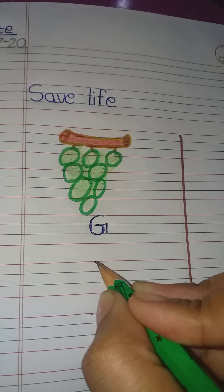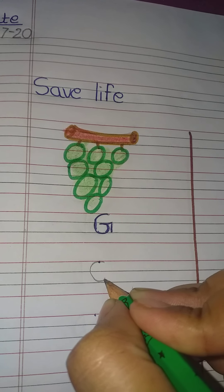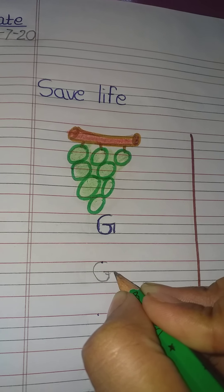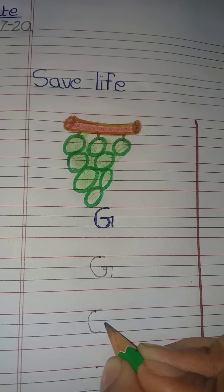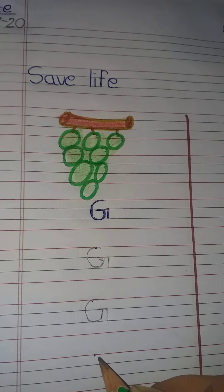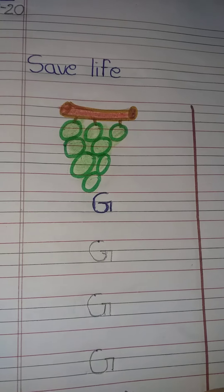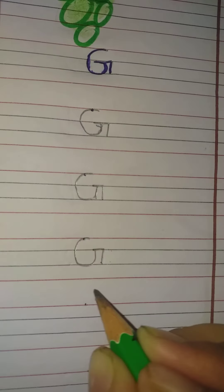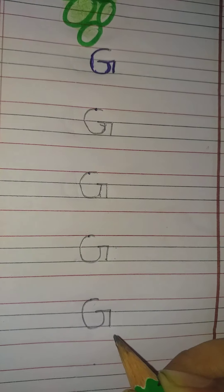First, use only the top three lines. To write G: make a C, then one slipping line, and a small standing line — G. Once more: make a C, slipping line, standing line. With the standing line, you have to make two blue lines. Curve, slipping line, standing line — G.